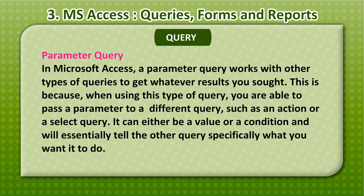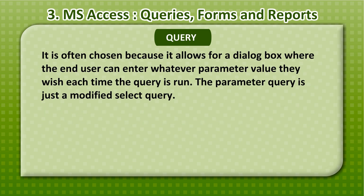In Microsoft Access, a parameter query works with other types of queries to get whatever results you sought. When using this type of query, you are able to pass a parameter to a different query, such as an Action or a Select Query. It can either be a value or a condition and will essentially tell the other query specifically what you want it to do. It is often chosen because it allows for a dialog box where the end user can enter whatever parameter value they wish each time the query is run. The parameter query is just a modified Select Query.